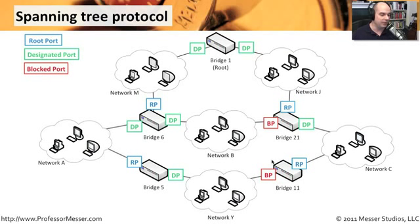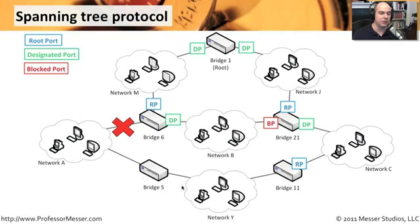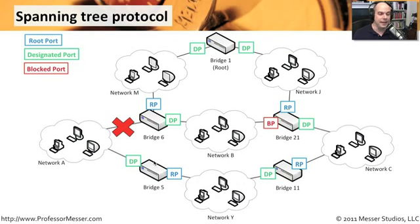But what if something happens — what if there's a problem? For instance, if you have a break right here in the network, and you wanted to get to network Y from network C, normally you would go all the way around through this connection. But if you can't get to bridge 6, now you have no way to get down to network Y. Since all of these bridges are talking to each other, they immediately go into a mode where they decide they can no longer communicate down to bridge 5, and need to find another way. So the network reconfigures itself on the fly, changes the root port on bridge 5, and swaps over so that it passes through network Y. Bridge 11 recognizes that and removes its blocked port, so network C and network Y are now directly connected, while still maintaining communication from network A back up to the root.